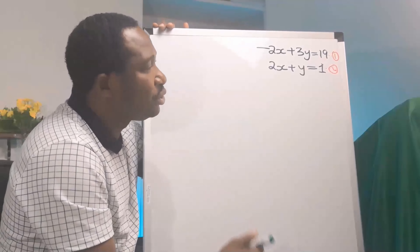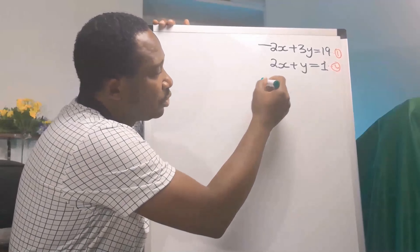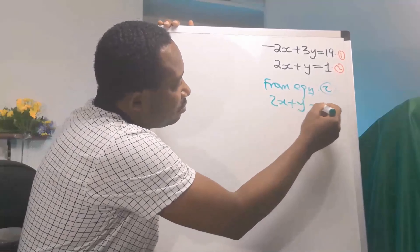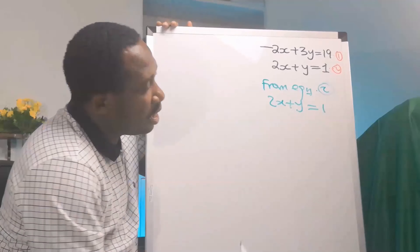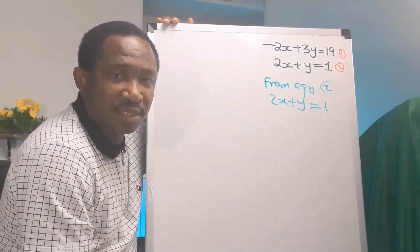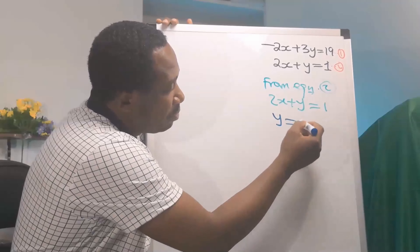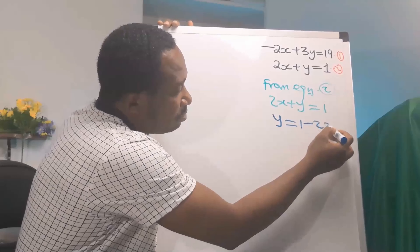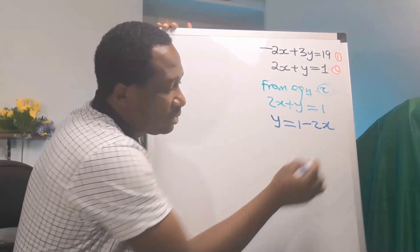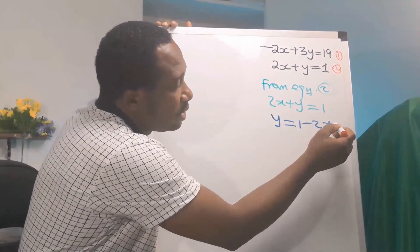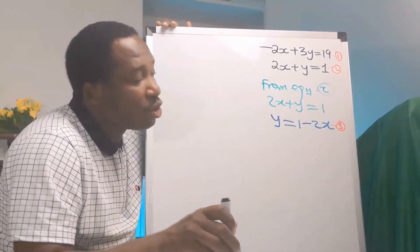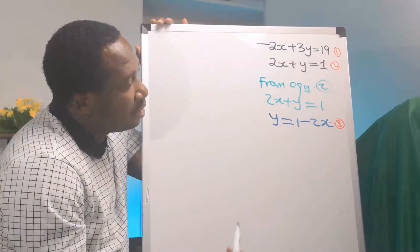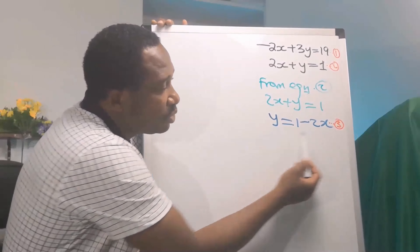Let me choose from equation 2. We have that 2x plus y is 1. Let me make y the subject. y will now be 1 — the 2x on the other side will become minus 2x. I will call this equation 3. We are going to substitute equation 3 into equation 1.